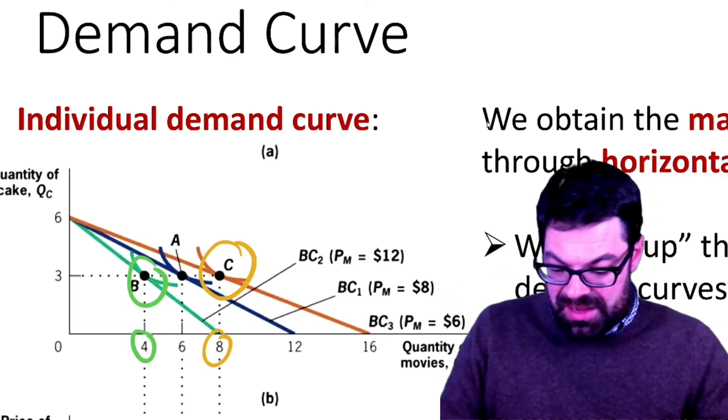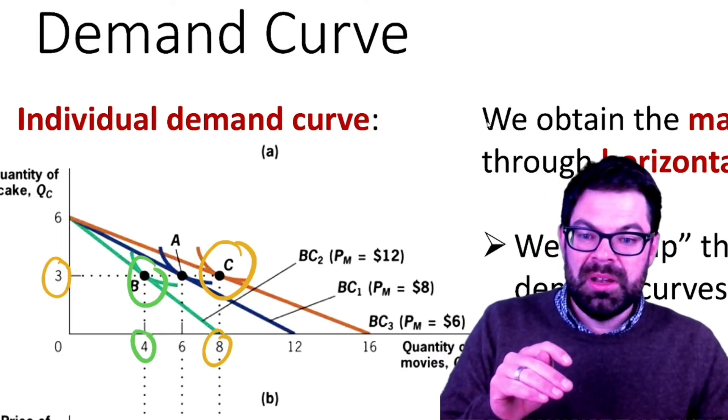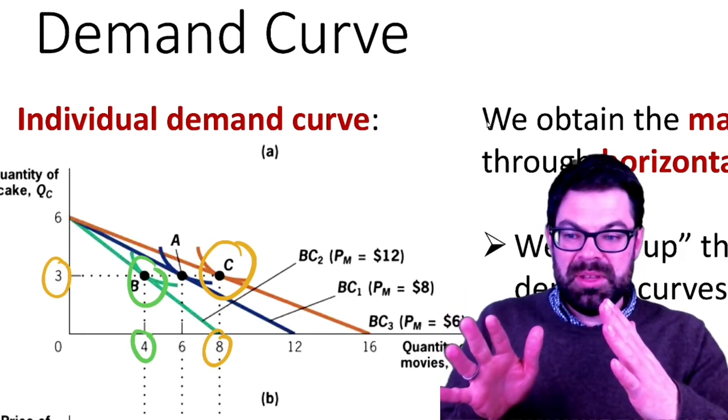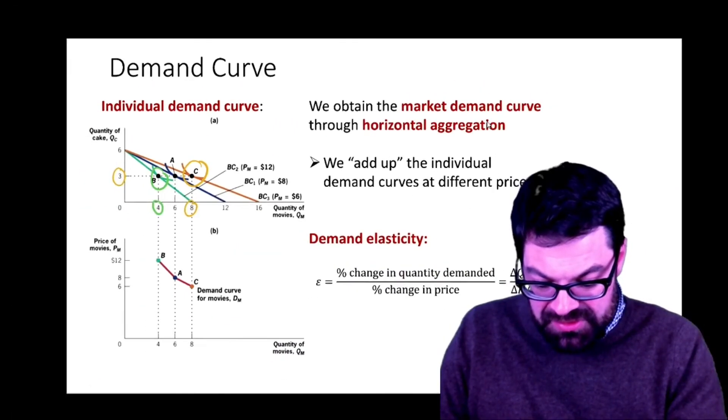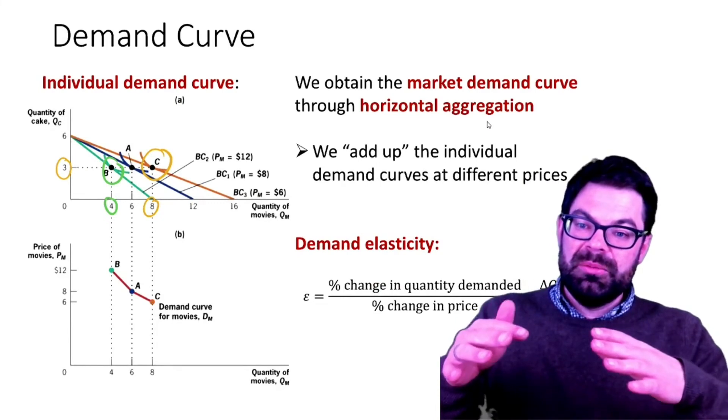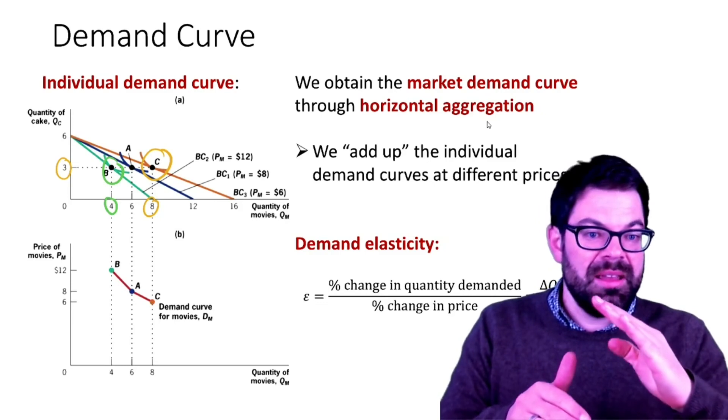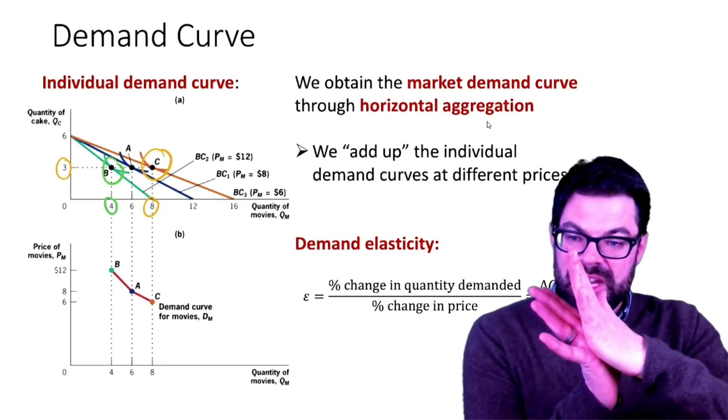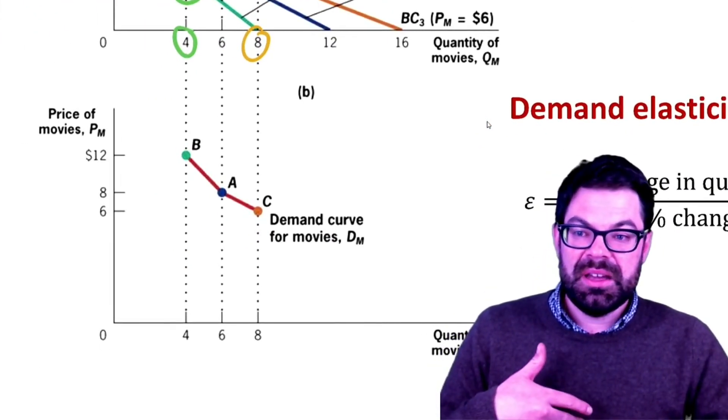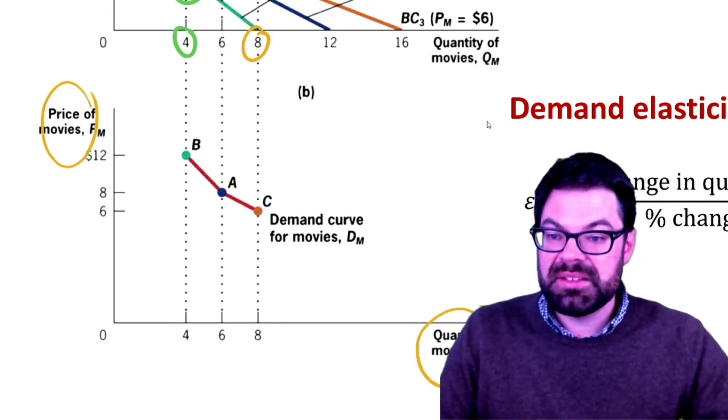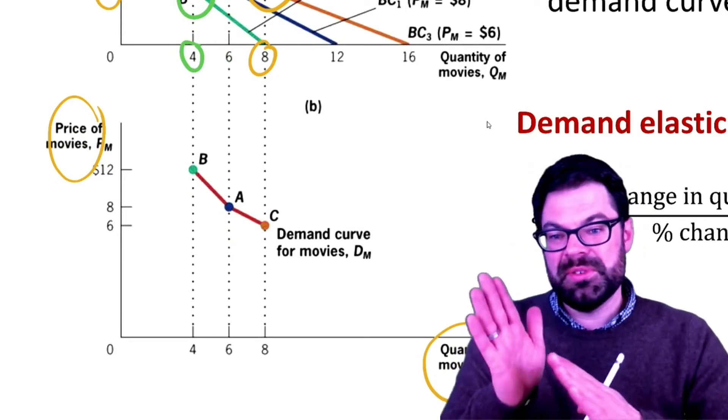Note here that this example is constructed so that the quantity of cake consumed is always three. You could obviously think of behavior whereby as movies become cheaper, preferences may be such that people consume proportionally even more movies and even fewer pieces of cake, or vice versa. But this is an instructive example. We vary the price of movies and then see what quantity that person would consume at that price optimally. Optimally means that their indifference curve is tangential to the budget constraint. In the graph at the bottom, we graph the quantity of movies against the price of movies and simply take the information from the graph above.